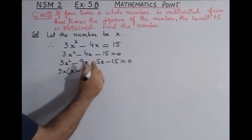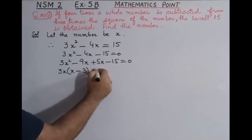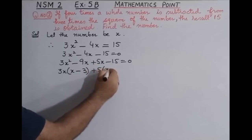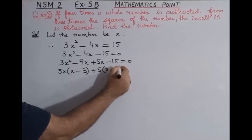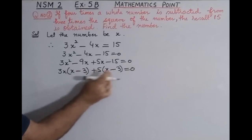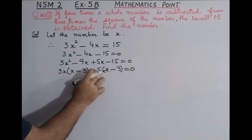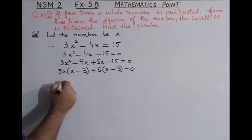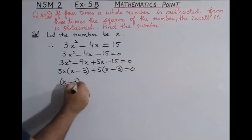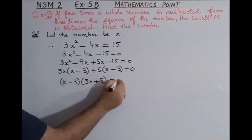From the last two terms, what is common? x is not common since x is only in one term, so we take 5 as common, giving 5(x - 3). So the equation becomes: (x - 3)(3x + 5) = 0.